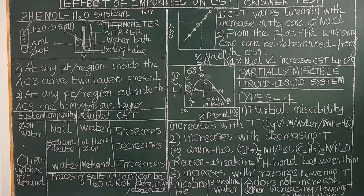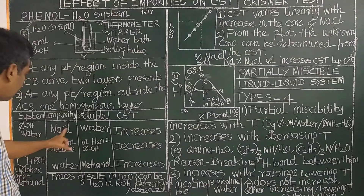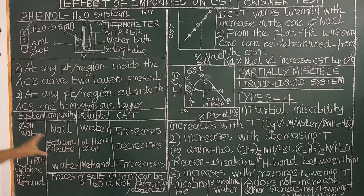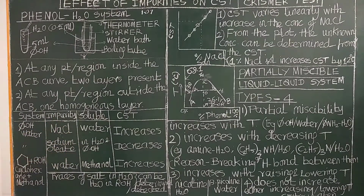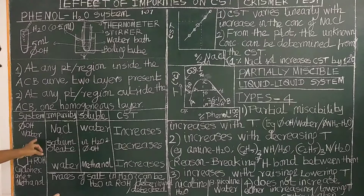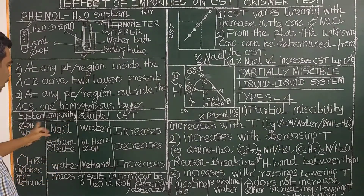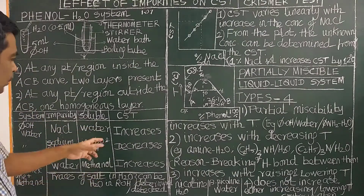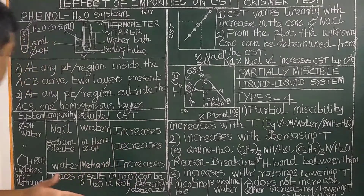Sodium chloride is a highly ionic compound; it is hydrophilic while phenol is more non-polar. Water is polar, therefore sodium chloride is soluble in water but insoluble in phenol. Since it is soluble in only one of the layers, it increases the CST.